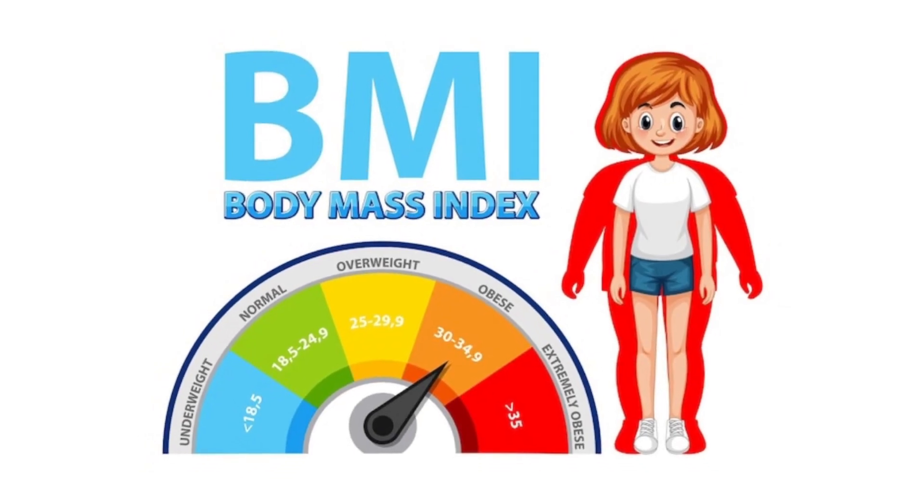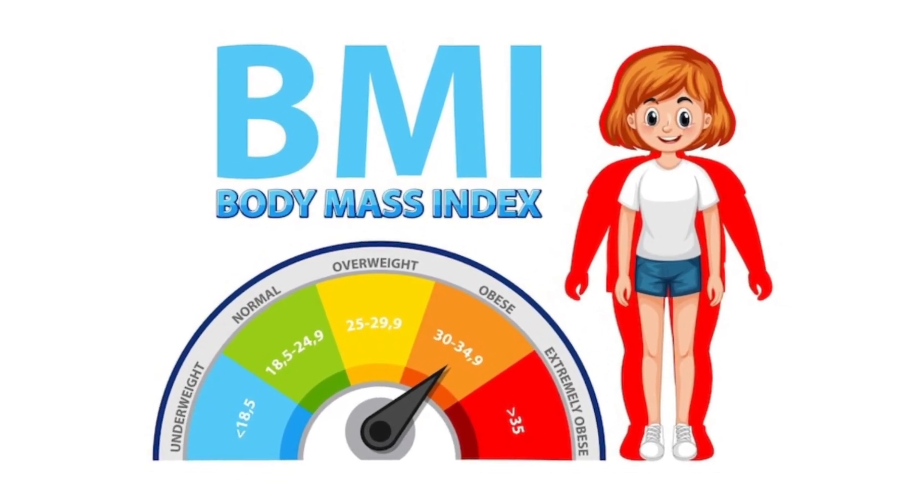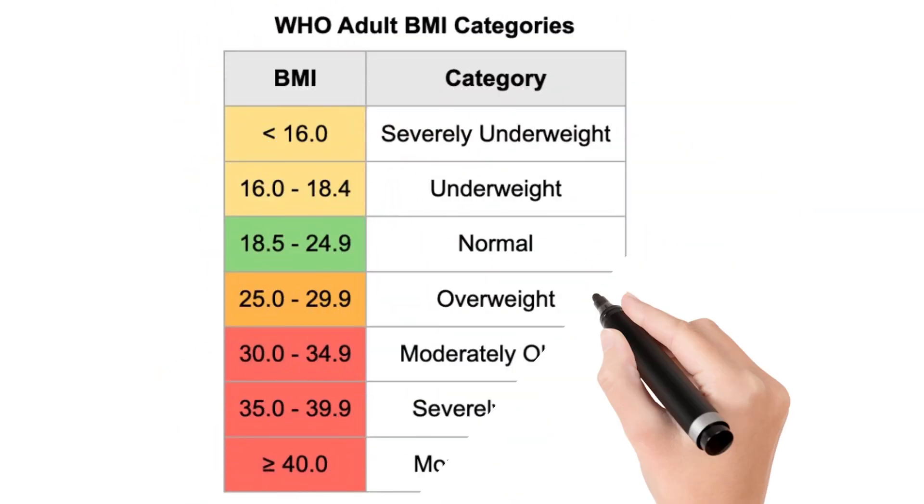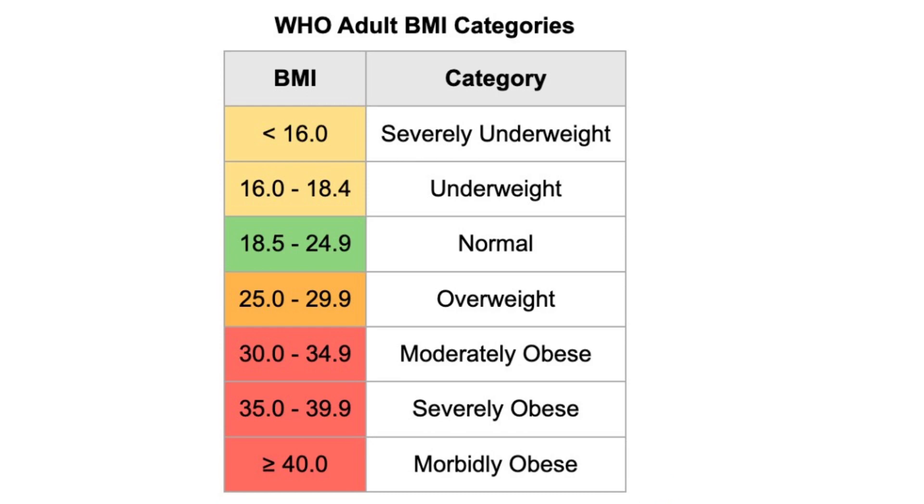As per WHO, World Health Organization, they have given a simple tabular formula that if the BMI is less than 16, the person is severely underweight. If it is 16 to 18.4, it is underweight.